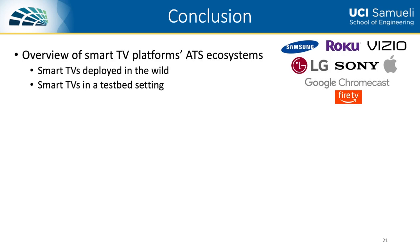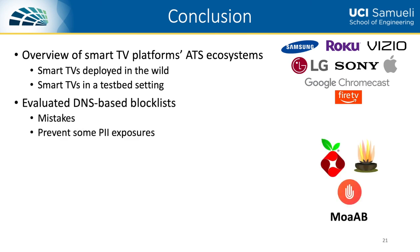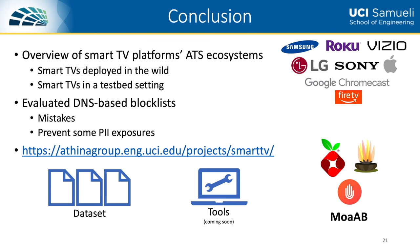In summary, we presented an overview of the ATS ecosystems of multiple Smart TV platforms by analyzing datasets collected from Smart TVs used by real users as well as in a testbed setting. We showed that Smart TV ATS ecosystems appear to differ substantially across different Smart TV platforms. We evaluated the effectiveness of DNS-based blocklists and found that no list is able to block all ads while preventing app breakage. We also found that blocklists prevent some exposures of PII but leave room for improvement. There is thus a need for additional research in improving blocklists for Smart TVs. Please visit our project website where you can access the dataset, and we are currently working on preparing our tools Rokustik and FireTastic for release.